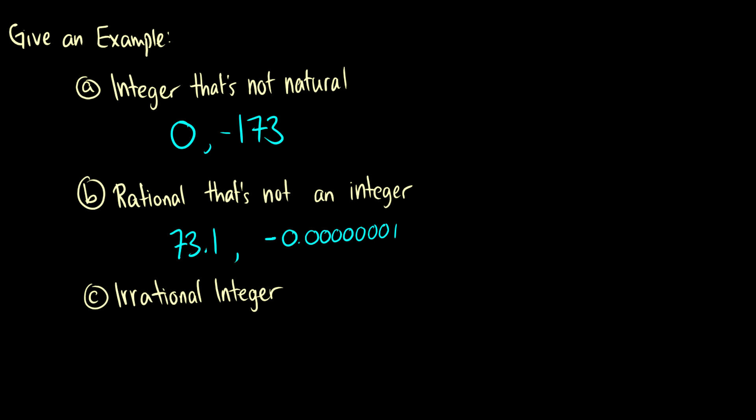Okay, so c is just a trick question. An irrational integer, there's none, because all integers are rational. So there is no such thing as an irrational integer.